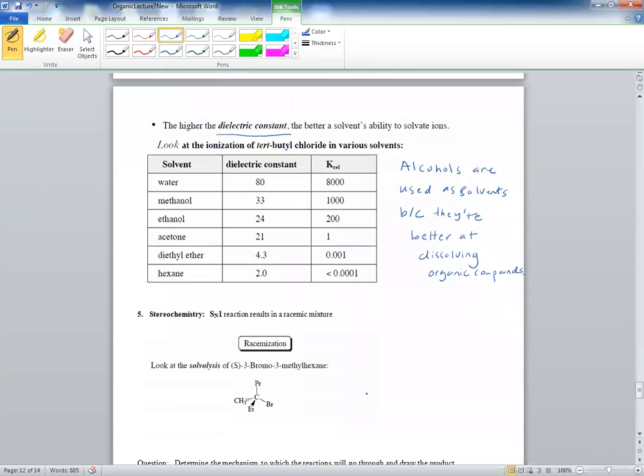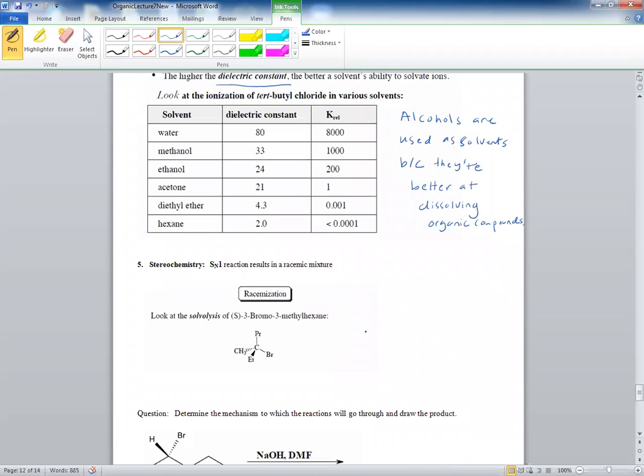The last thing we need to talk about is stereochemistry. In stereochemistry, SN1 results in a racemic mixture.